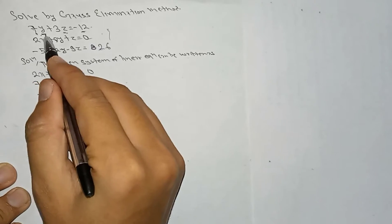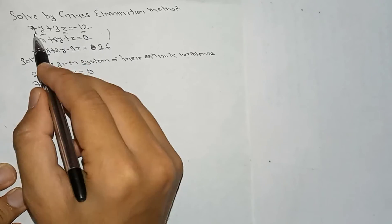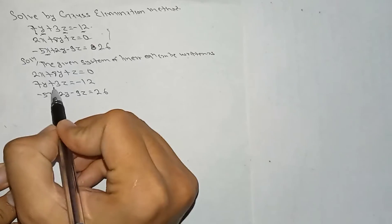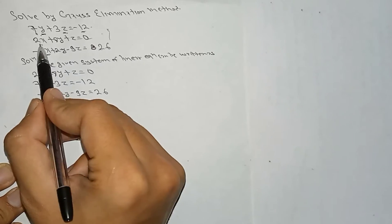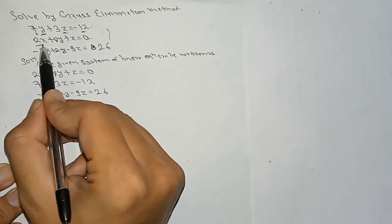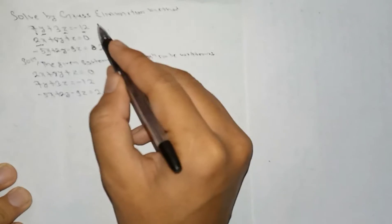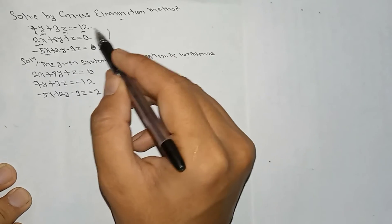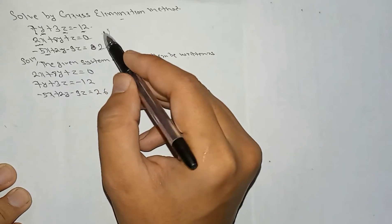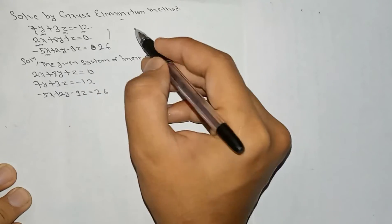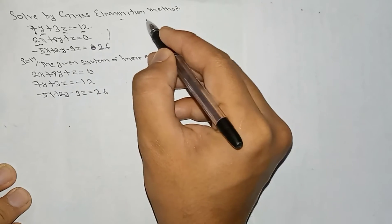In the first equation we have 7y plus 3z, but we don't have the value of x. So we have to find the equation to have the value of x. Always remember: to find x, y, z by Gauss elimination method, we have to make the matrix like this.